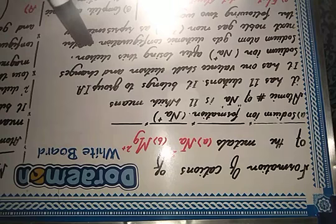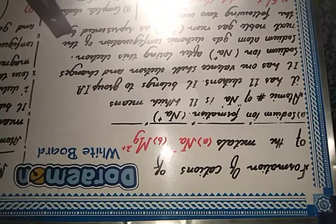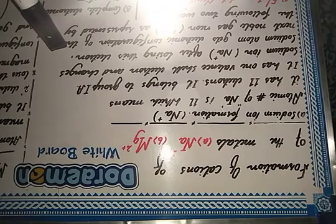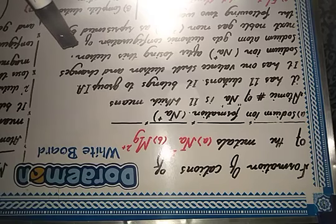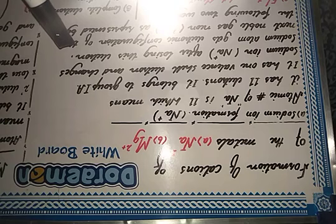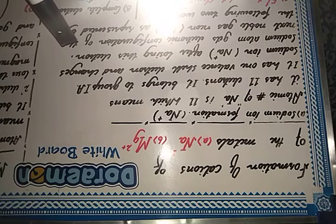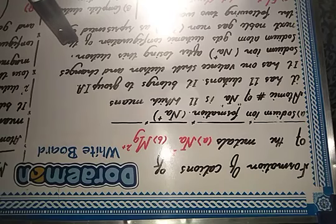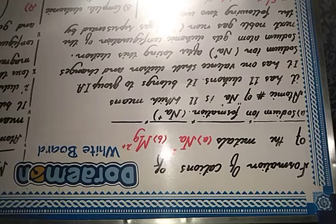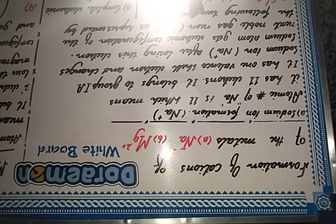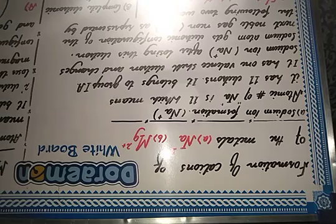Sodium has to get rid of that lone valence electron. This is how sodium ion formation occurs — sodium gets stability like the nearest noble gas, neon, by losing this one electron from its outermost shell and achieving the same electronic configuration as neon.